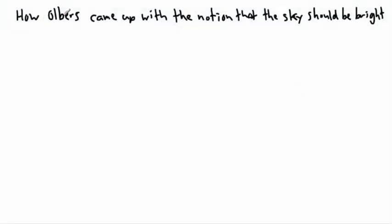So in Olbers' Paradox, it's important to talk about how the idea came up. He wasn't the first one to come up with it, but he's the one who made it famous. So how do we come up with the notion that the sky should be bright? That seems like a really strange conclusion.